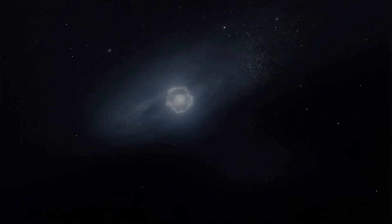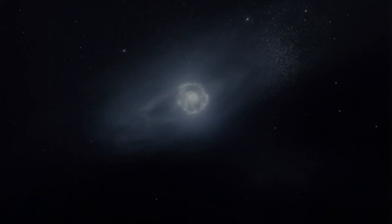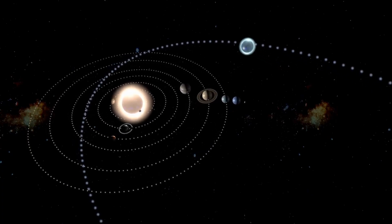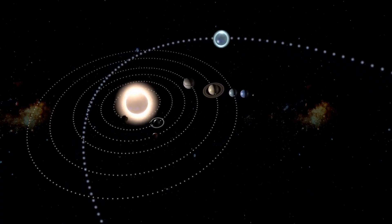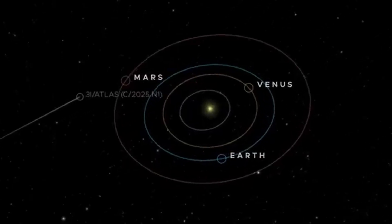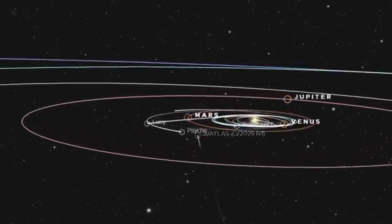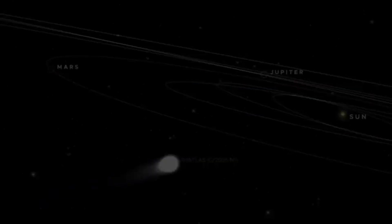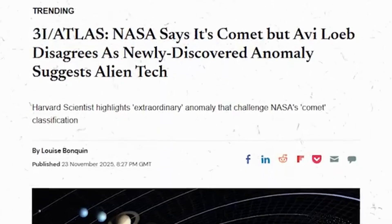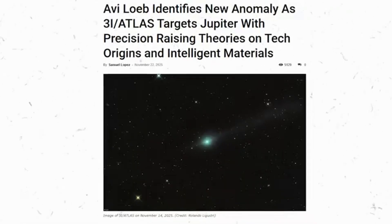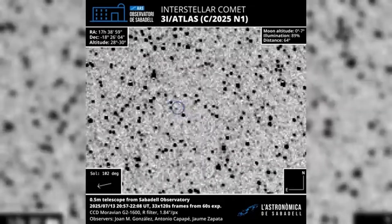No matter the outcome, the object's trajectory has already sparked one of the most intriguing scientific puzzles of recent years. Its arrival at Jupiter's boundary carries with it the potential to deepen understanding of interstellar visitors and challenge assumptions about the quiet regions between stars. The scientific world now waits for the moment of closest approach when data and physics will reveal whether 3i Atlas is an improbable outlier, an exemplar of unknown cometary behavior, or the first sign of something that defies the familiar patterns of the solar system.